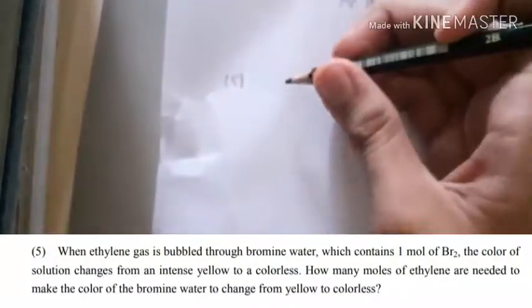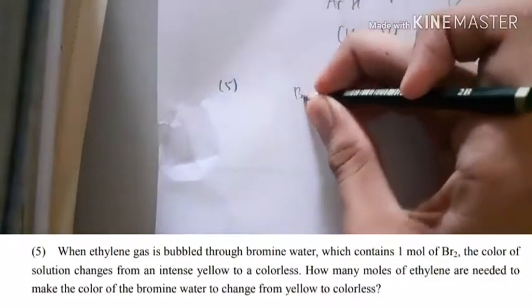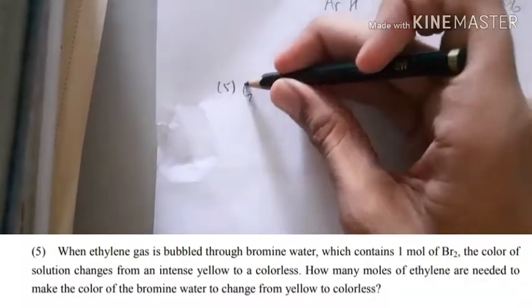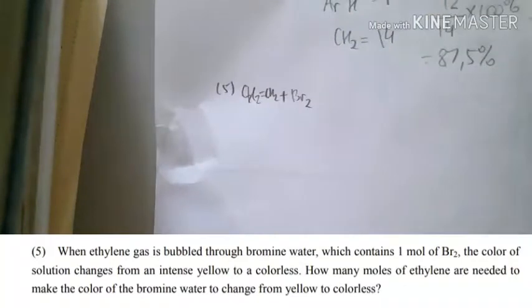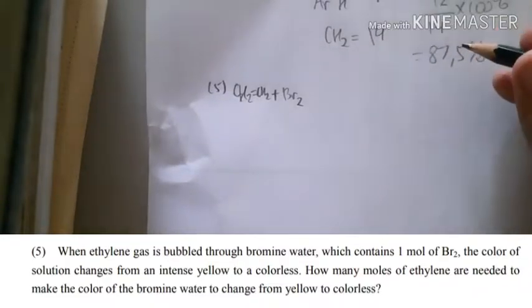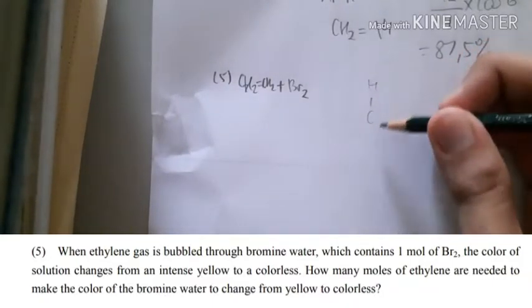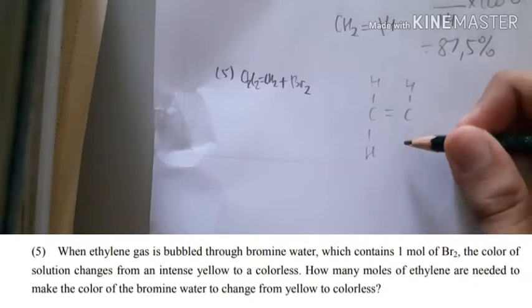For number five, when ethylene gas is bubbled through bromine water, that is Br2. How many moles of ethylene to change the bromine water from yellow to colorless? How many moles of ethylene to mix together to become the perfect compound to change the color? Basically, just draw the structure.